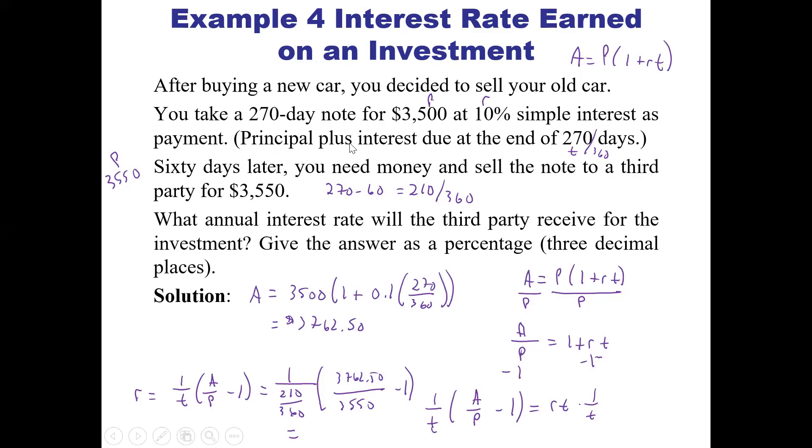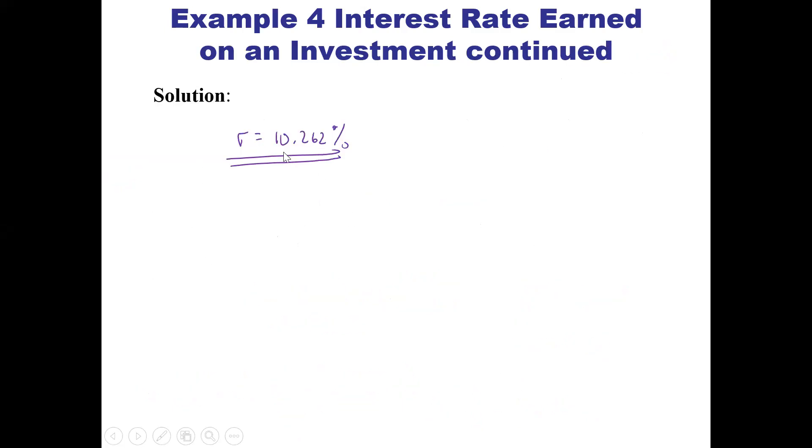That's the rate that the third party is getting on this investment, okay? So you had to pay 10%, and they're getting 10.262 out of it. And so that's how they work on that one. All right. So let's stop there and go some more.